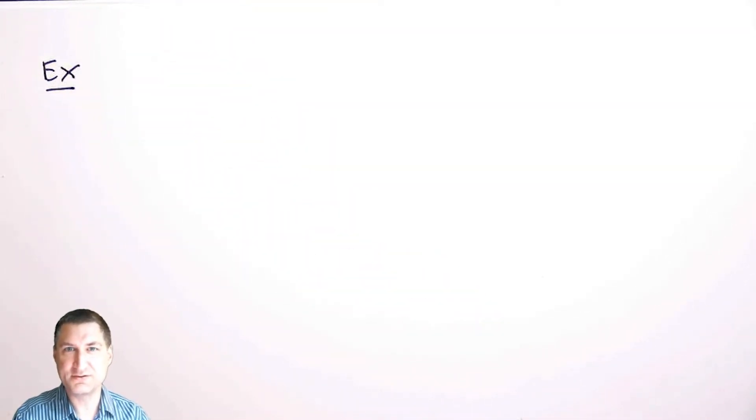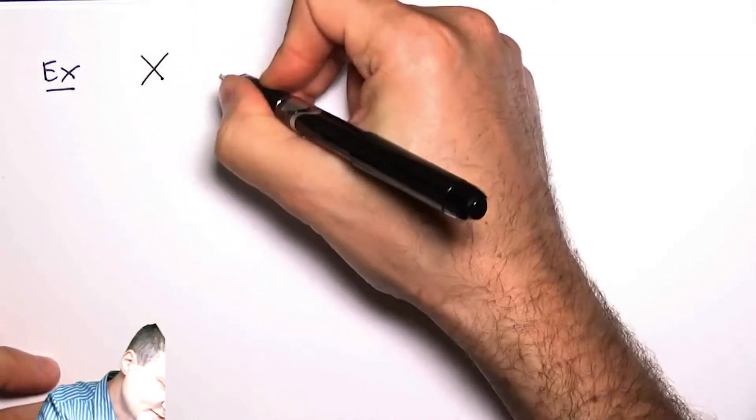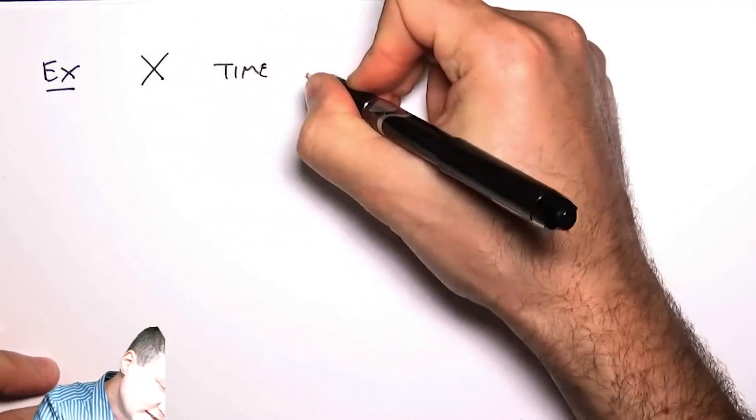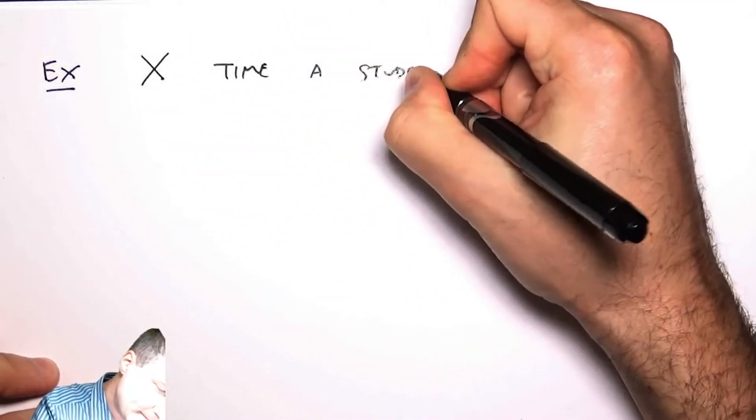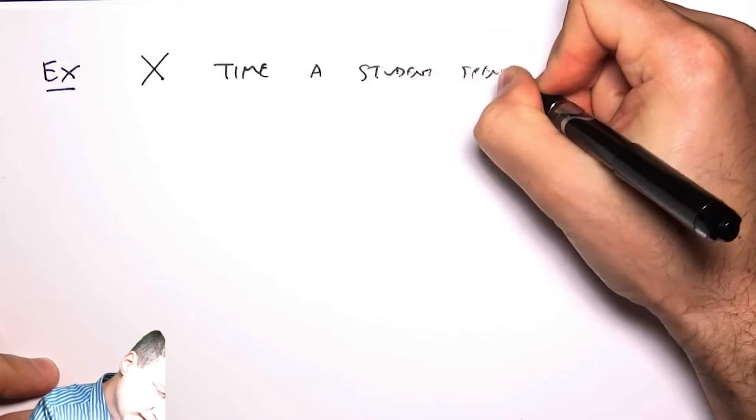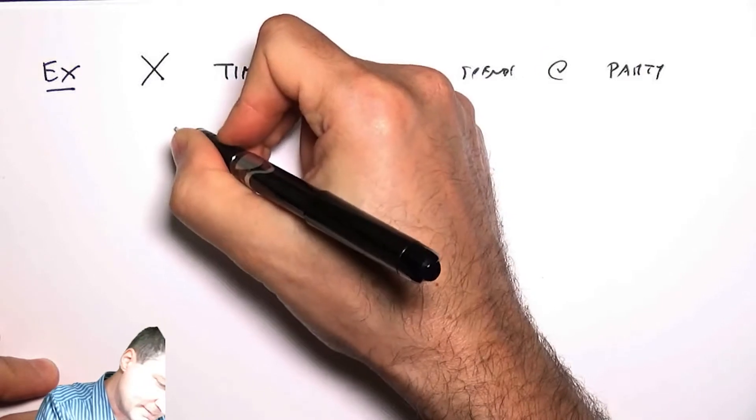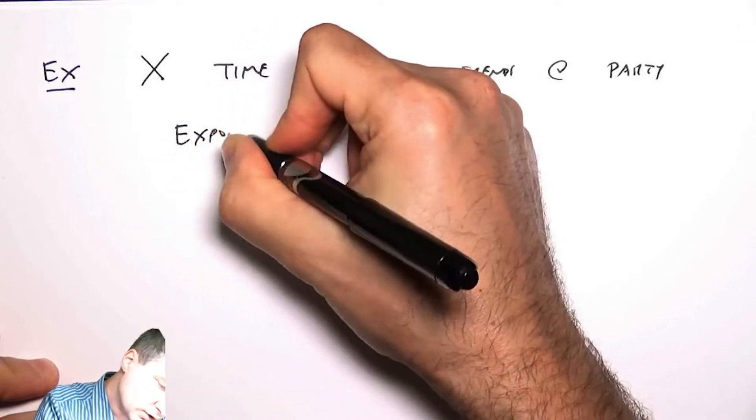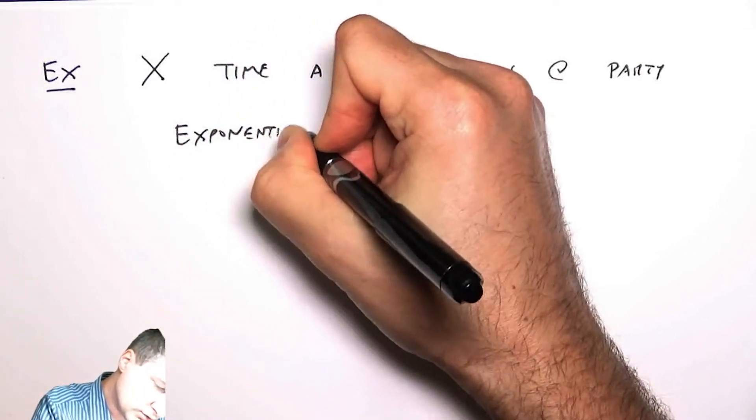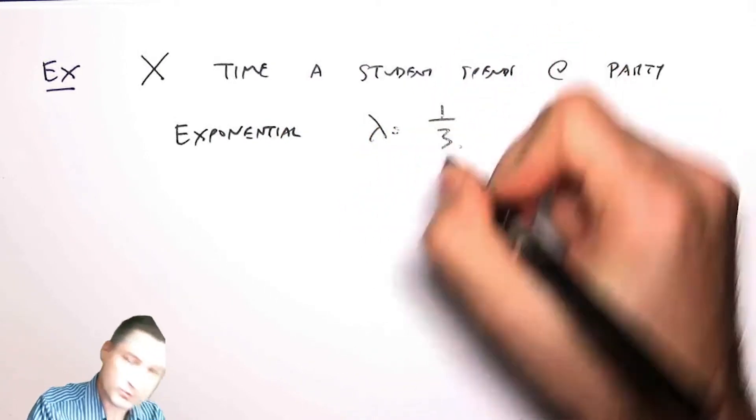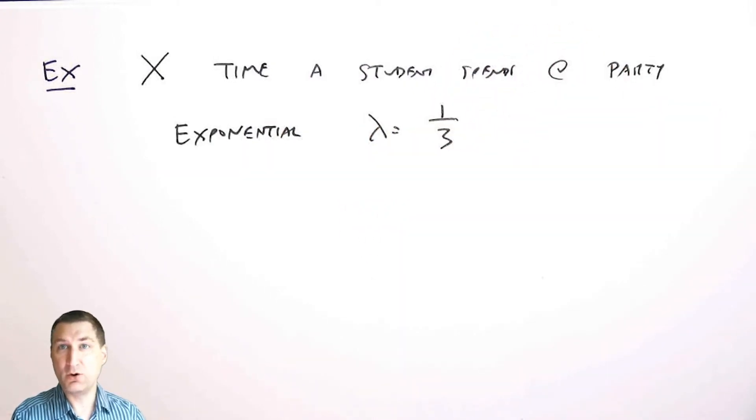Let's suppose that X is the time a student spends at a party and we're going to model X as exponential with the parameter lambda equals one over three.